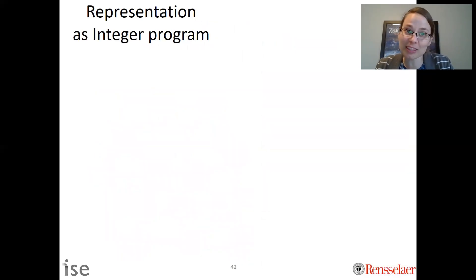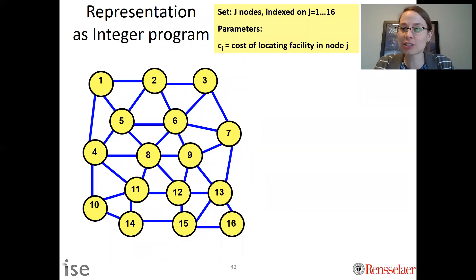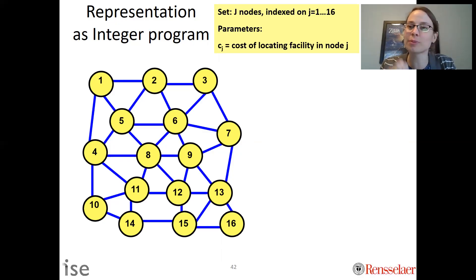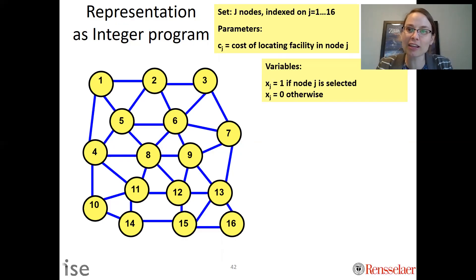We can also represent this as an integer program — an optimization model. First, we denote our sets and parameters. Our set is nodes 1 through 16. Parameters are things that are given — in this problem, the cost of locating a facility in node j, written as c_j. Our decision variable x_j is 1 if node j is selected, and 0 otherwise. This is called a binary variable — it can either be 1 or 0, meaning I either build or I don't build.